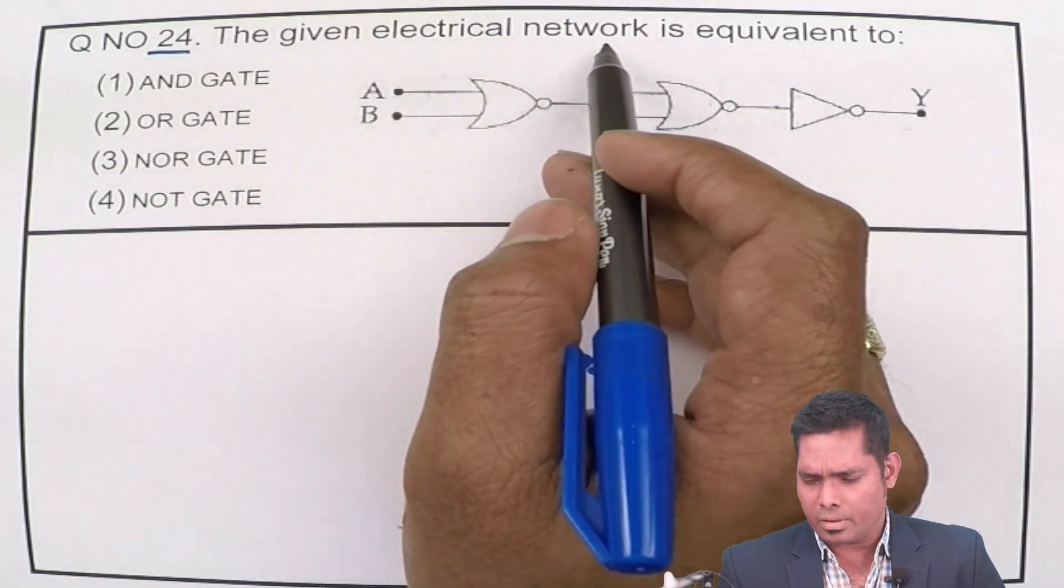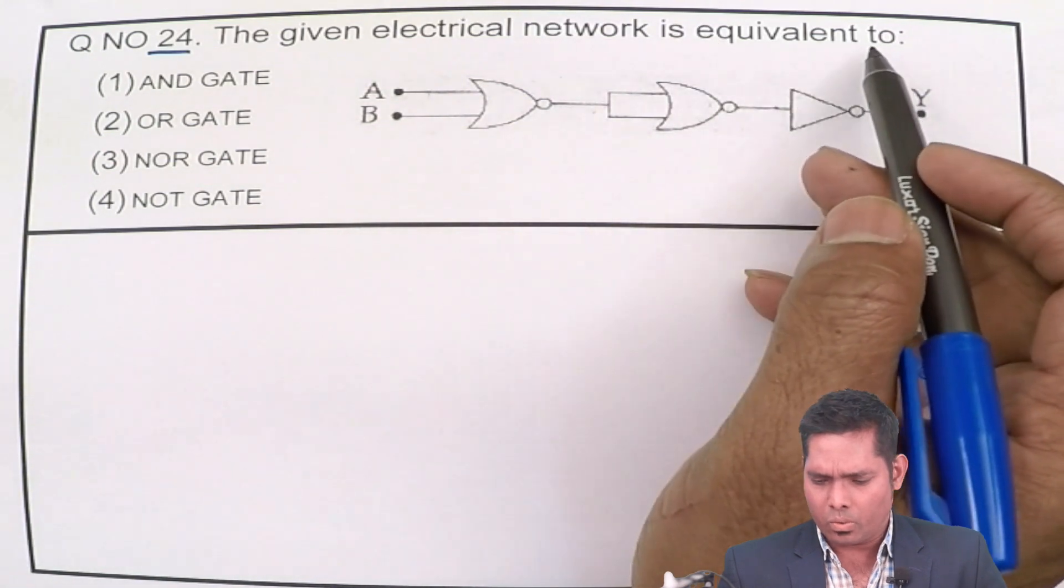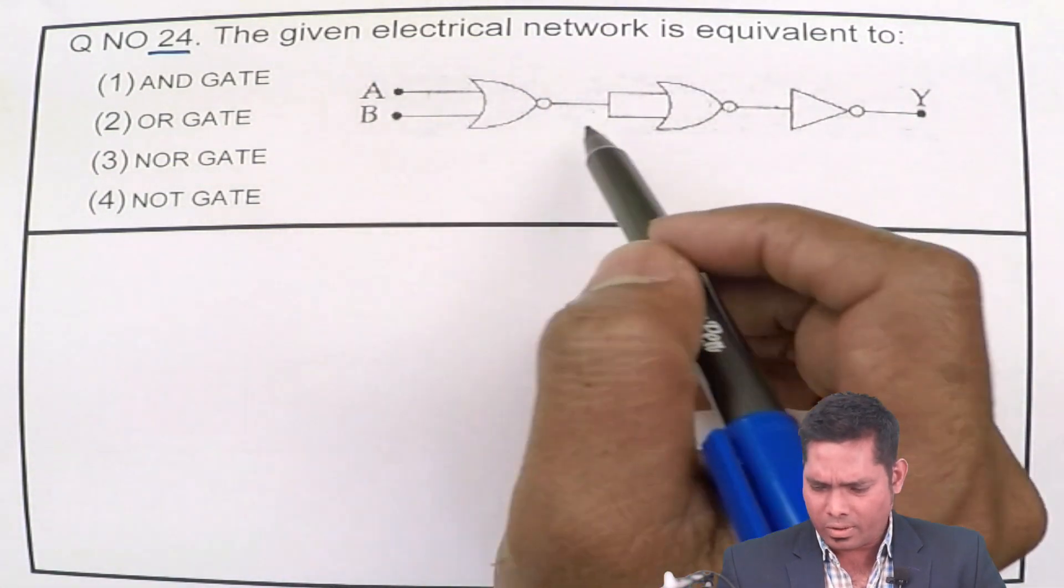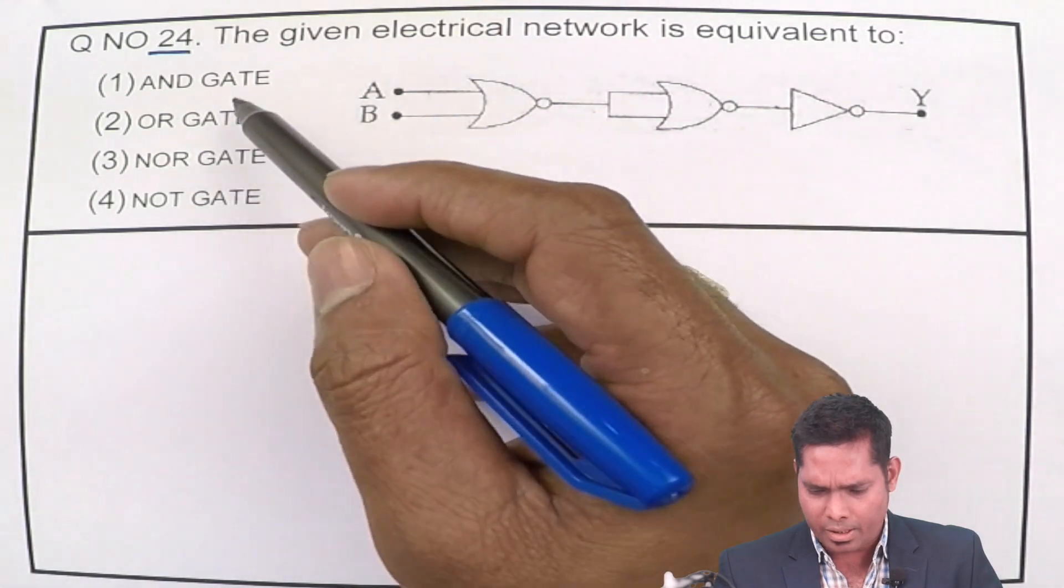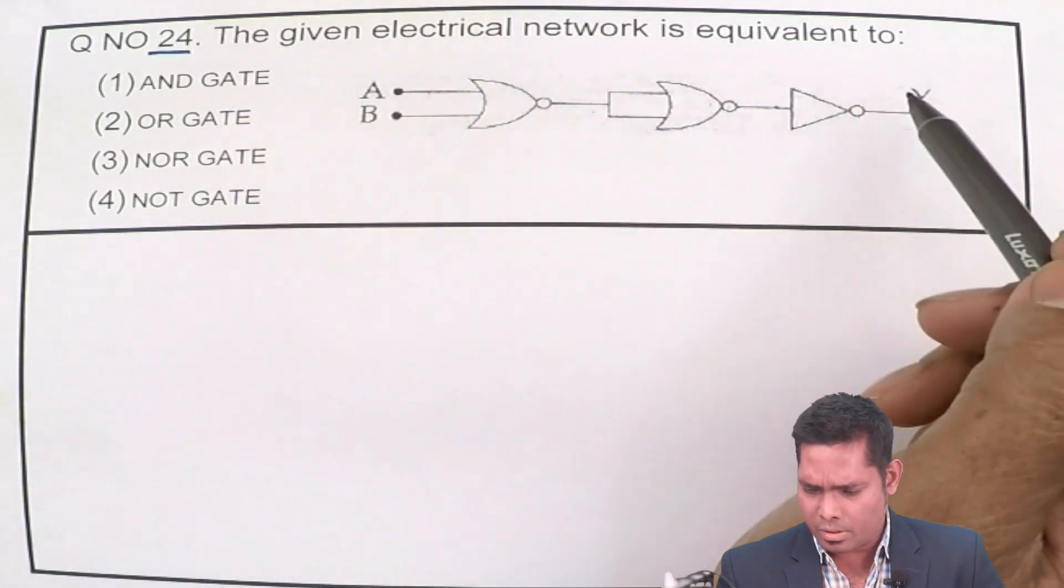The given electrical network is equivalent to - so it is a logic gate and we have to see which one of these gates is matching with this diagram.